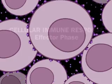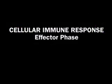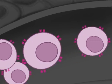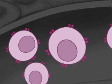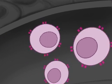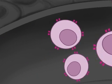The cloned T cells circulate in the blood and lymph. In the effector phase of the cellular immune response, activated cytotoxic T cells destroy virus-infected cells wherever they encounter them. The infected cells display viral antigen on their surfaces.